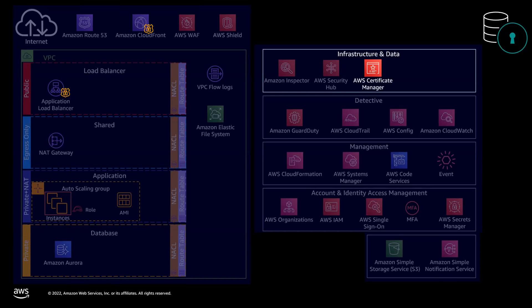Anyone who has had to manage their own certificates knows that the renewal process can be quite frustrating, and if a deadline is missed, that can lead to an outage. Helpfully, AWS Certificate Manager manages the renewal process for certificates. To protect data at rest, we use AWS Key Management Service or KMS. KMS makes it easy to create and manage cryptographic keys and natively integrates into a wide range of AWS services. In this architecture, KMS integrates to encrypt data at rest in the Elastic File System, on EBS volumes associated with EC2 instances, and for the Aurora database. Without classifying data, you don't know what level of protection is actually needed for each type of data.